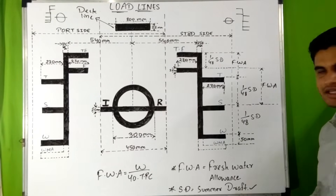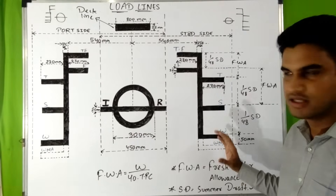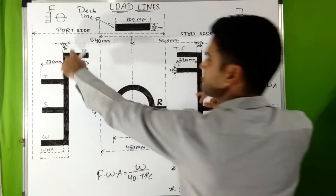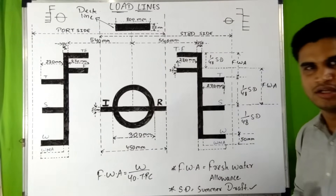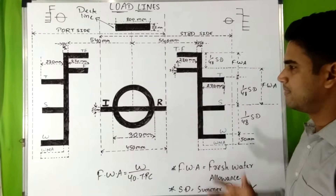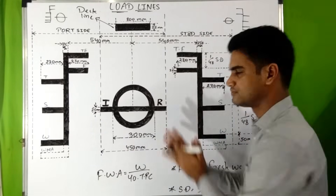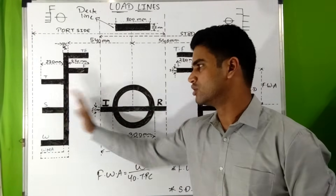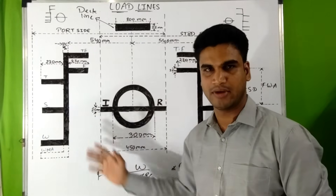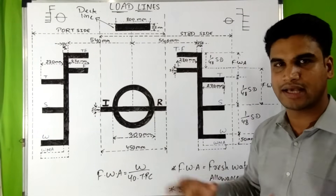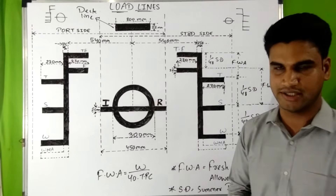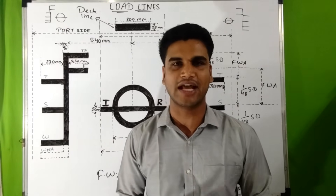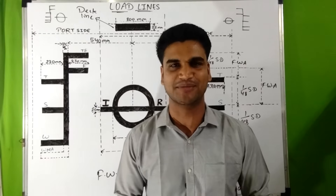We can see markings to the forward of the Plimsoll mark, and similarly in the aft — the difference is visible between port side and starboard side. On the starboard side, the Plimsoll mark is drawn to the aft of the zone markings, while on the port side it is drawn to the forward of the zone markings. The deck line and Plimsoll marks are exactly at midships on both sides. I hope you liked the video — please click the like button, share the video, and subscribe to the channel. Thank you.